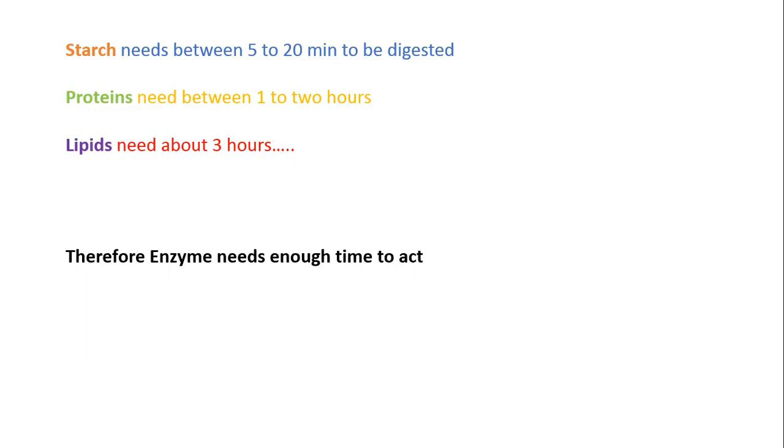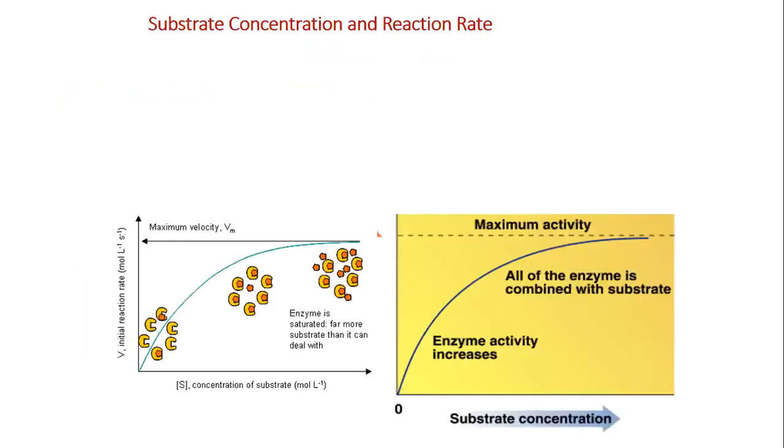So therefore, enzyme needs enough time to act. These are the factors that act on the enzyme activity. Specific substrate. Enzyme is specific for one substrate. Temperature is affecting the enzyme activity. pH medium.